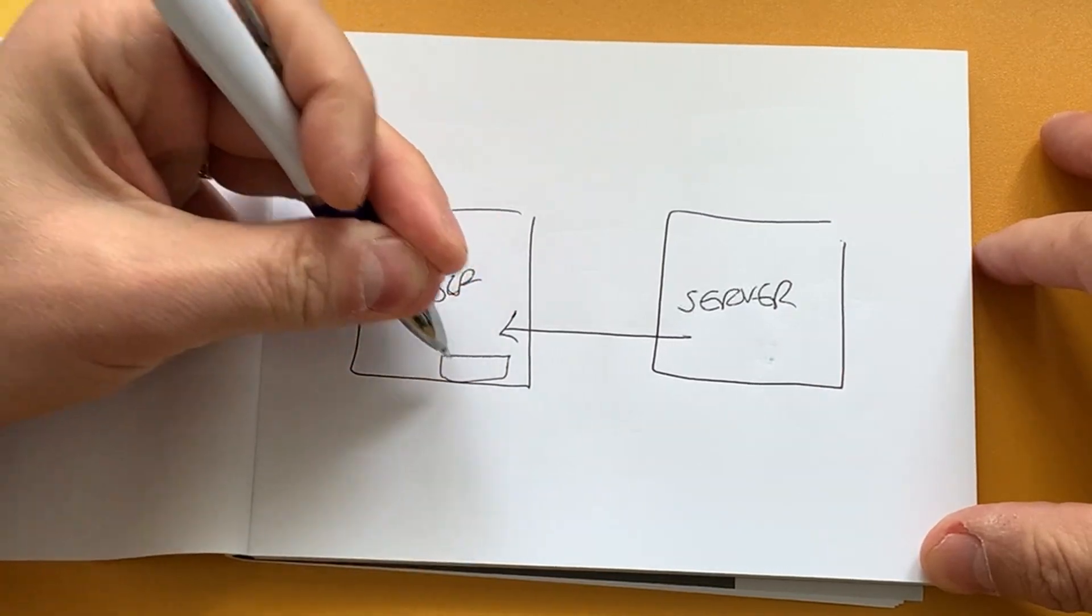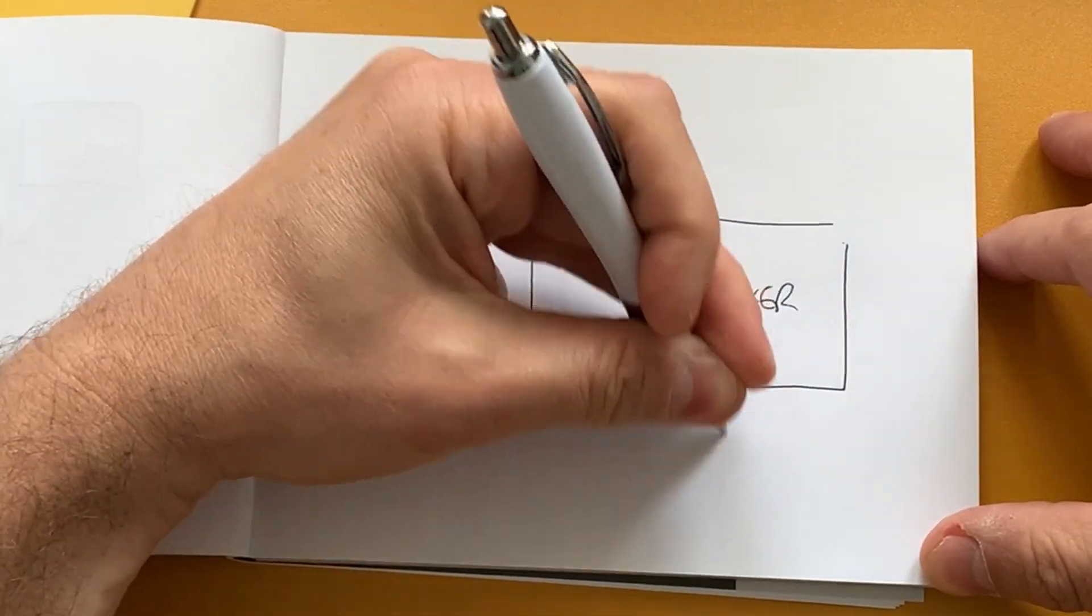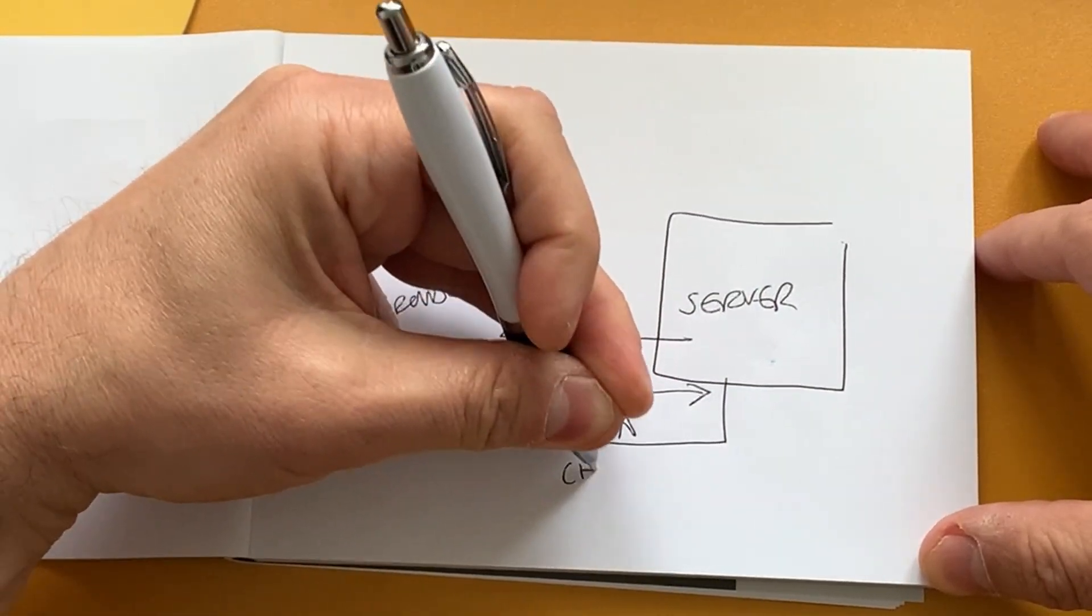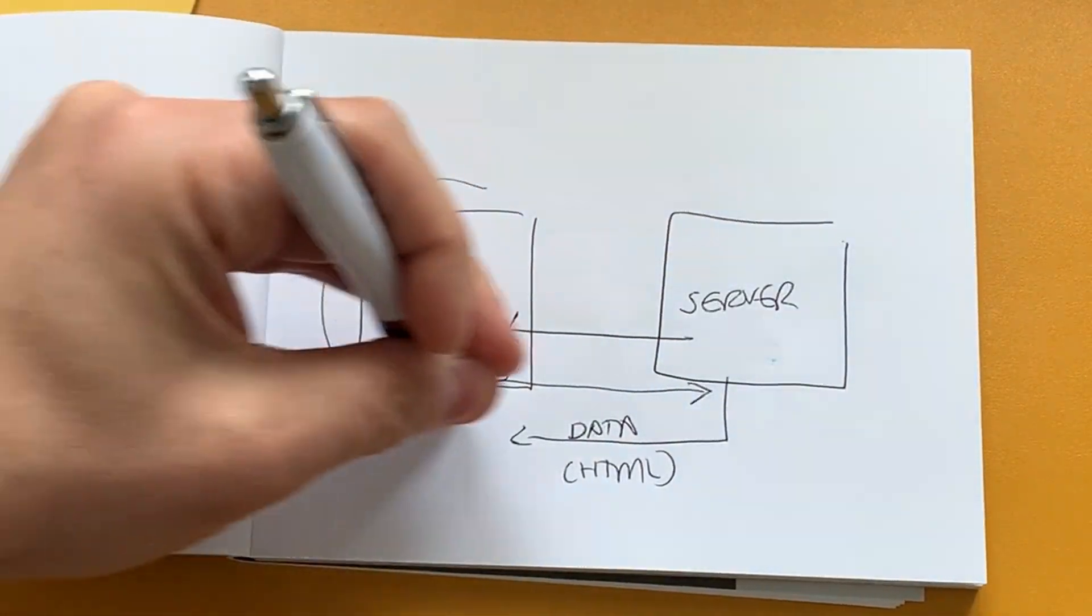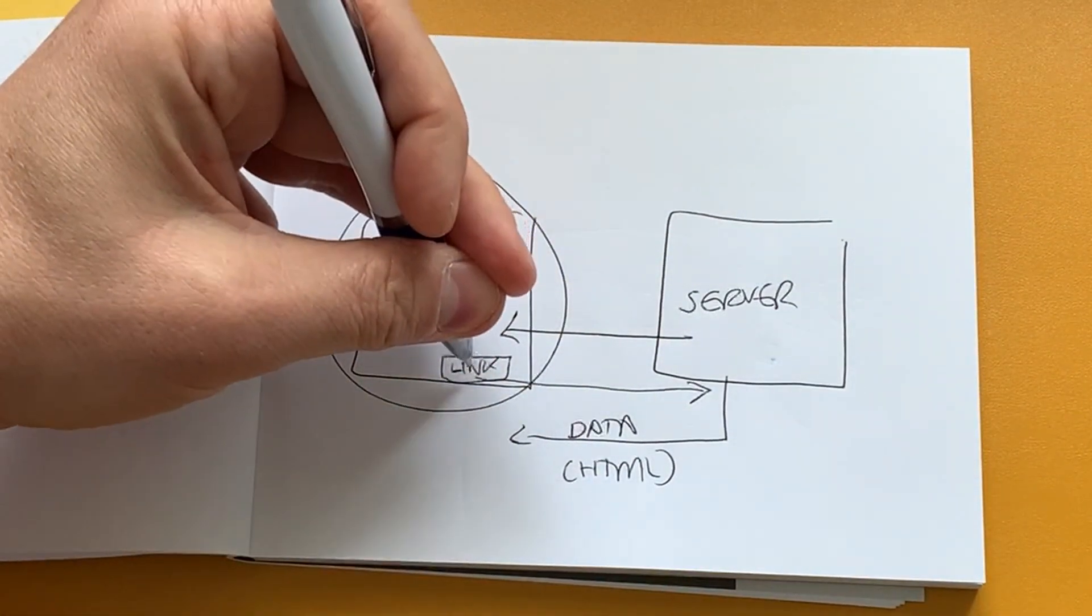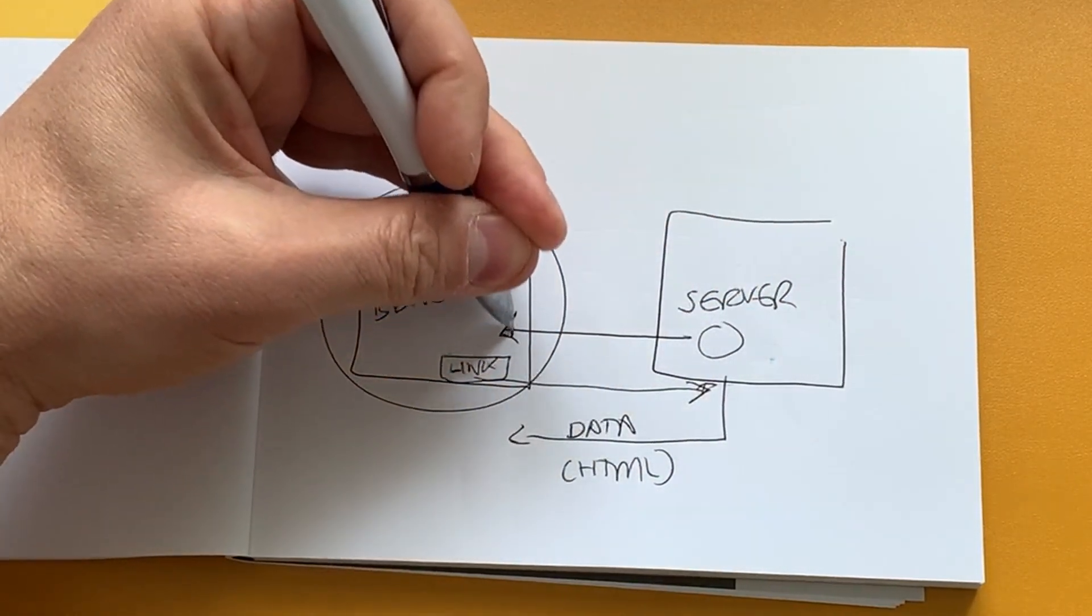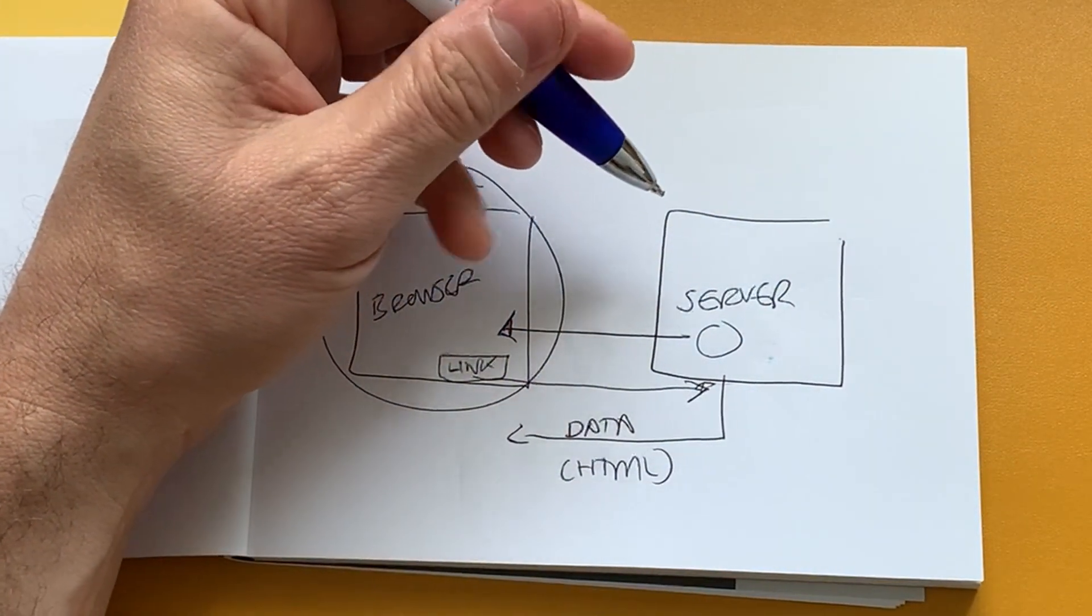When a client clicks on a link, it sends a request to the server, and the server will handle this request and send back a response or data with HTML code which the browser will then render, and you as the user then view the web page. So you make a request, the server handles it, and sends back all the code to your browser.